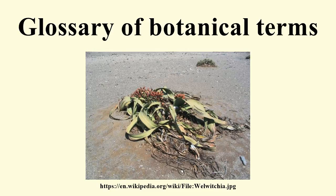Amphitropous: when the ovule is bent so that both ends are near each other. Compare anatropous, campylotropous, orthotropous. Amplexicaul: with the base dilated and clasping the stem, usually of leaves. Anastomosing: when veins are joined by cross veins to form a network.